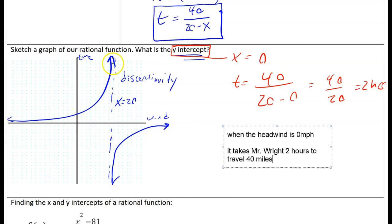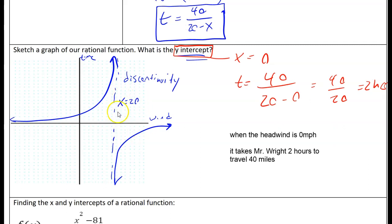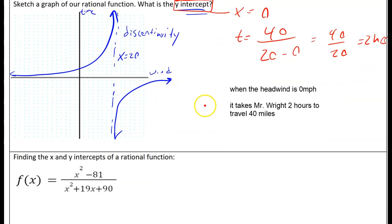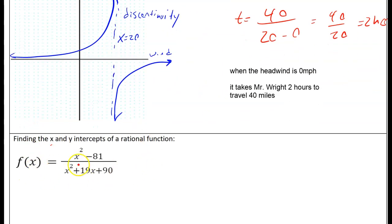That makes sense that it would match our original result where we weren't thinking about headwinds at all. Notice as the wind gets bigger, the time gets bigger. When we get to x equals 20, my graph starts to not make any more sense. If you're trying to ride 20 miles per hour into a 20 mile per hour wind, you're not actually getting anywhere. This break in the graph is called an asymptote. We're going to study that in more depth in the next lesson.